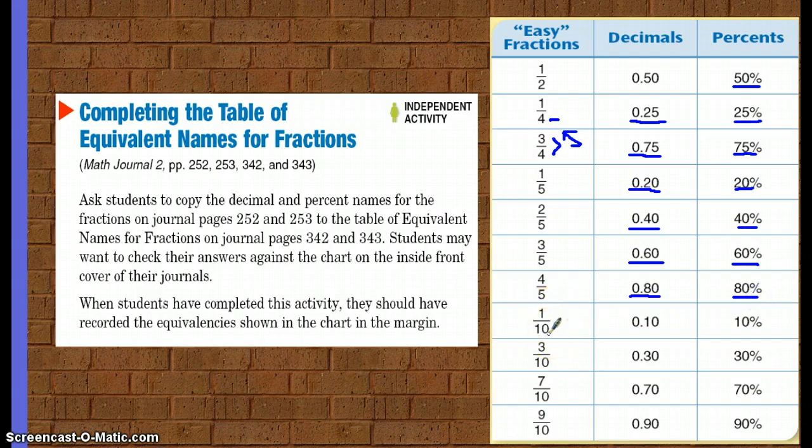A tenth of a dollar is a dime, and that dime is written as a 0.10, or it's 10 percent of a dollar, because it takes ten of those to equal 100 percent. Three-tenths, just that one-tenth added three times, 0.30, or 30 percent of a dollar. Seven-tenths, 0.70, or 70 percent of a dollar. And nine-tenths, 0.90, or 90 percent of the dollar.